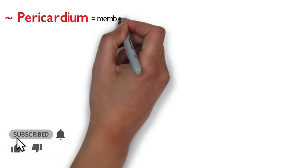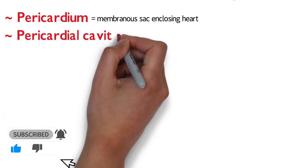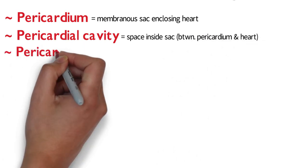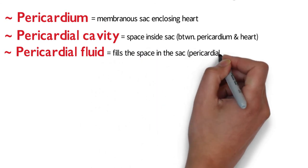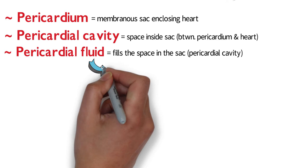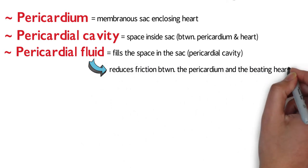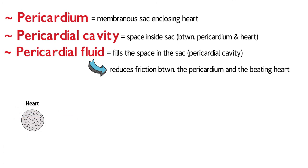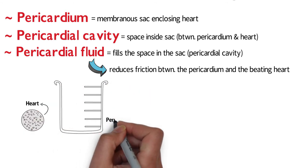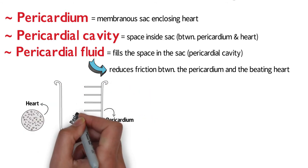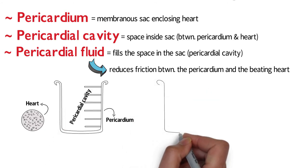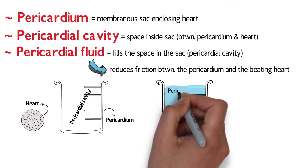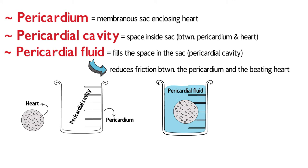A couple more important parts of the heart: the pericardium is a membranous sac enclosing the heart. The pericardial cavity is the space inside the sac between the pericardium and the heart. The pericardial fluid fills that space and reduces friction between the pericardium and the beating heart. To visualize this: the ball is the heart, the beaker is the pericardium, the empty space inside the beaker is the pericardial cavity, and water filling the beaker represents the pericardial fluid.